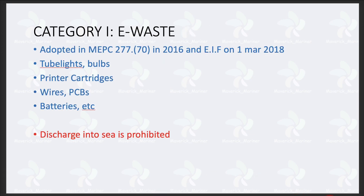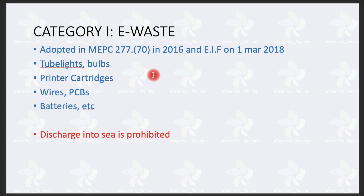Category I — e-waste. This is new; it entered into force on 1st March 2018. It was adopted in MEPC 70 in 2016 and entered into force on 1st March 2018. Under e-waste: tube lights, bulbs, printer cartridges, wires, PCBs, batteries, etc. Discharge of e-waste into sea is also prohibited.